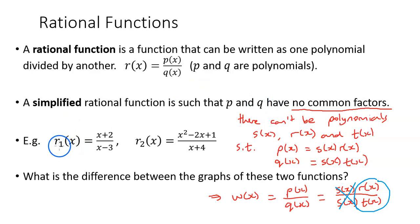So two examples. r1(x) equals x plus 2 divided by x minus 3. And r2(x) equals x squared minus 2x plus 1 divided by x plus 4. These are both simplified rational functions. And you can check using polynomial division that we don't have this situation over here.